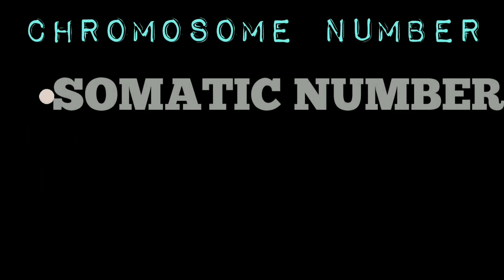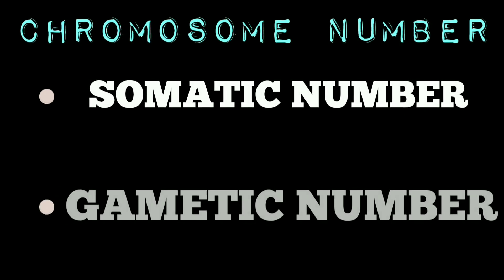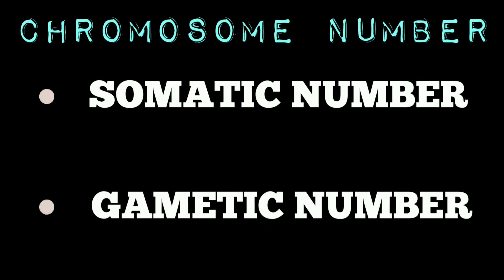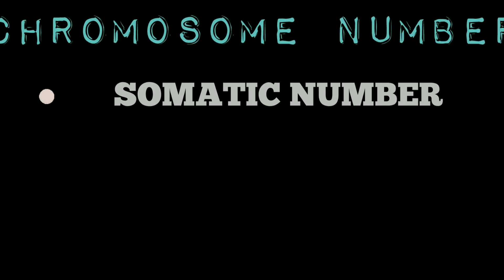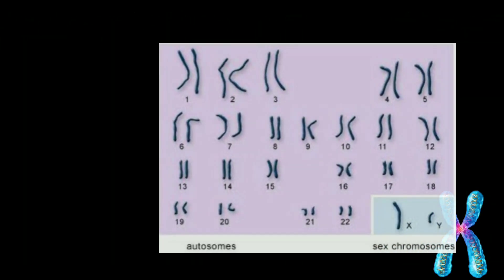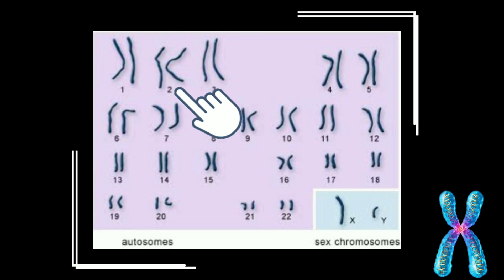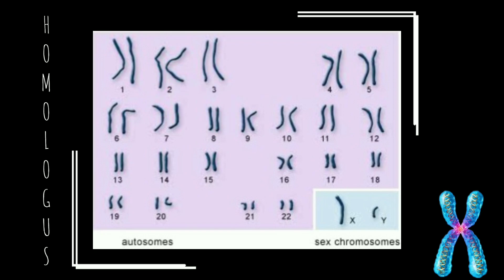Now we need to know about chromosome number. Each species has a definite and constant somatic and gametic chromosome number. Somatic chromosome numbers are the chromosomes found in somatic and meristematic tissues of a species and are represented by 2n. Somatic cells contain two copies of each chromosome. The two copies of a chromosome are ordinarily identical in morphology, gene content, and gene order, and are known as homologous chromosomes.